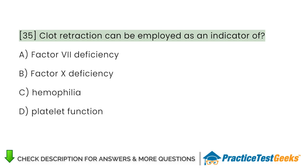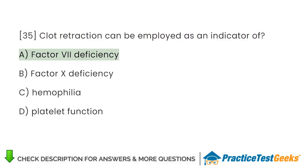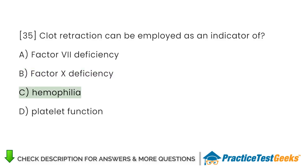Clot retraction can be employed as an indicator of: A. Factor VII deficiency. B. Factor X deficiency. C. Hemophilia. D. Platelet function.